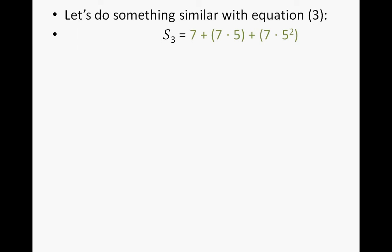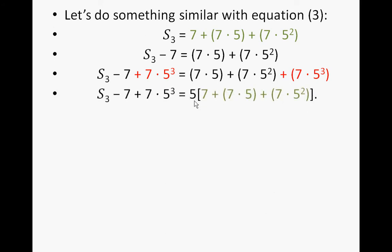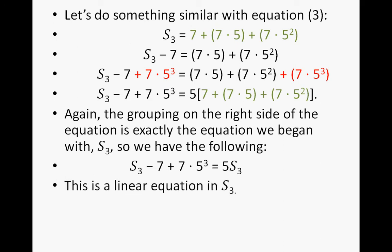Now let's do something similar with equation 3. By subtracting 7 from both sides we get the expression on the right side. Now we're going to add 7 times 5 to the third power, meaning that this is the third step. Factoring out a 5, we again get a grouping in green that is exactly the original S sub 3. So we substitute that, and we have a linear equation in S sub 3.